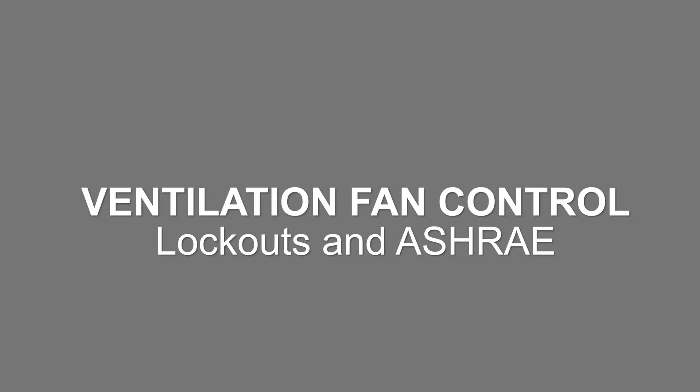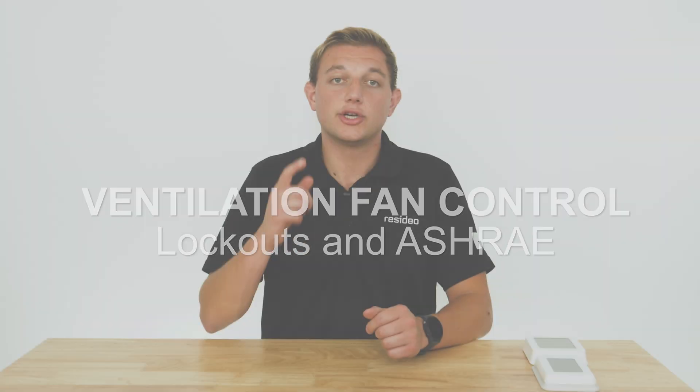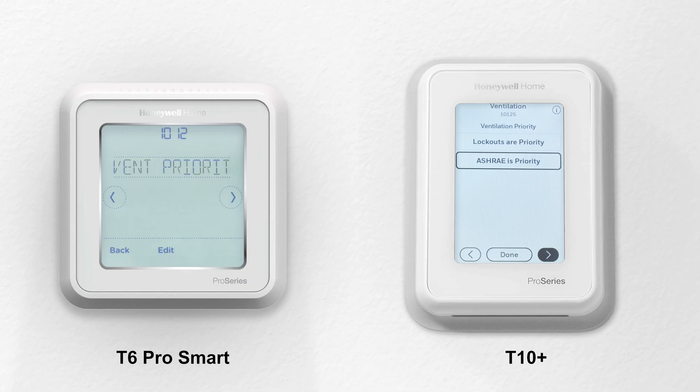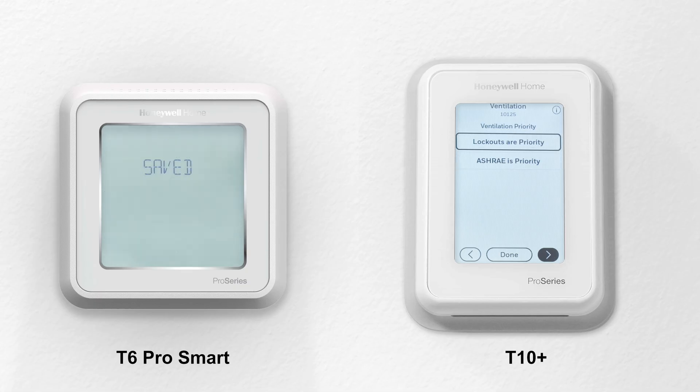Under Ventilation Priority, you can select whether lockouts take priority or ASHRAE takes priority. When lockouts are priority, the thermostat won't run ventilation during lockout conditions. I'll cover setting these optional lockouts in a moment.